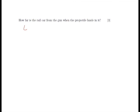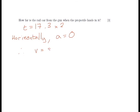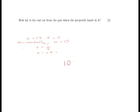Now we're interested in how far along the rail car has travelled by the time the projectile lands in it. The projectile needs to go up to its maximum point and return again, which will take twice as long — because it goes up and then back down again. Horizontally, there is zero acceleration and no air resistance, so this is a speed-distance-time calculation. Distance equals speed times time: 100 multiplied by 17.3 multiplied by 2, which equals 3,460 metres.